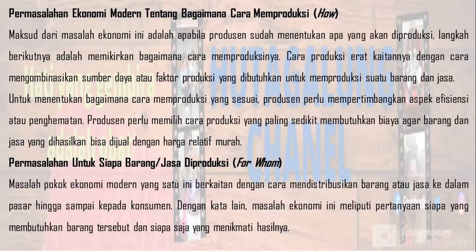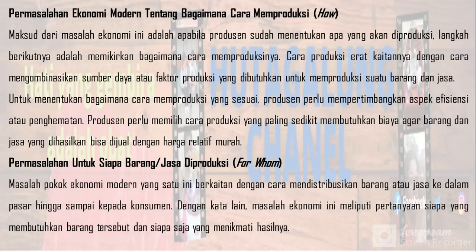Permasalahan ekonomi modern tentang bagaimana cara memproduksi. Maksud dari masalah ekonomi ini adalah apabila produsen sudah menentukan apa yang akan diproduksi, langkah berikutnya adalah memikirkan bagaimana cara memproduksinya. Cara produksi erat kaitannya dengan cara mengombinasikan sumber daya atau faktor produksi yang dibutuhkan untuk memproduksi suatu barang dan jasa. Untuk menentukan cara produksi yang sesuai, produsen perlu mempertimbangkan aspek efisiensi atau penghematan, dan memilih cara produksi yang paling sedikit membutuhkan biaya agar barang dan jasa yang dihasilkan bisa dijual.